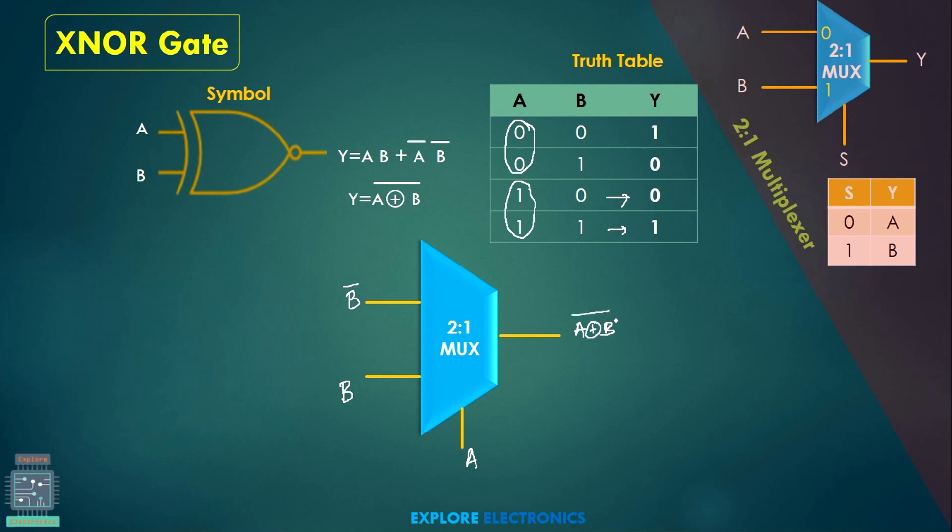This is how we can implement XOR gate and XNOR gate using 2-to-1 multiplexers. Thank you.